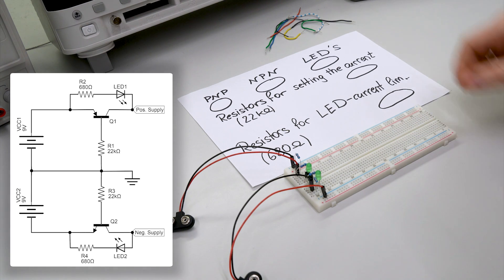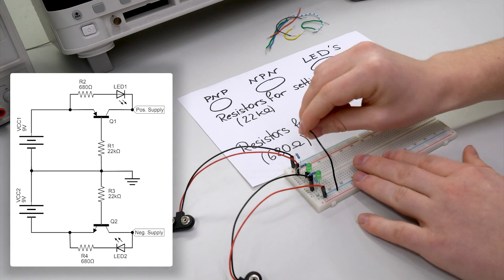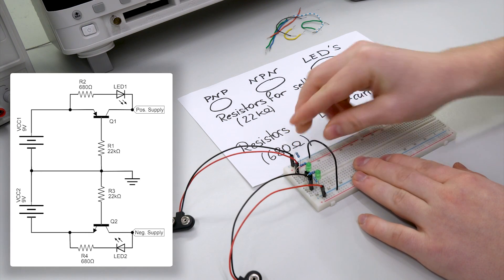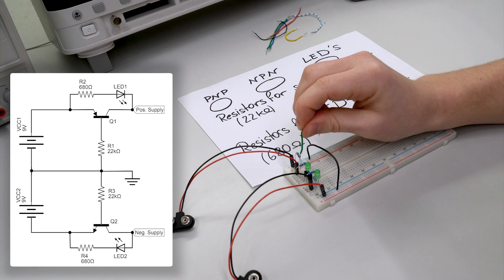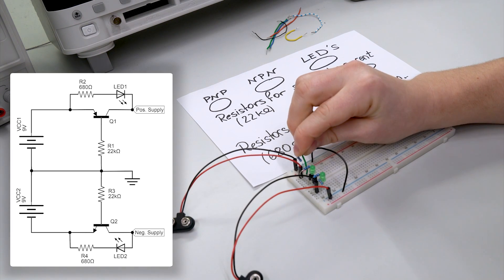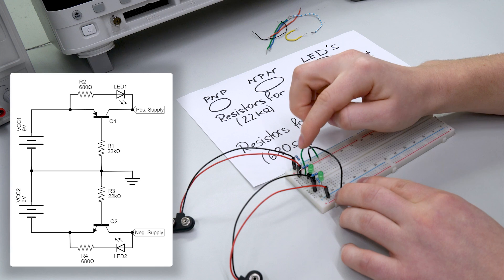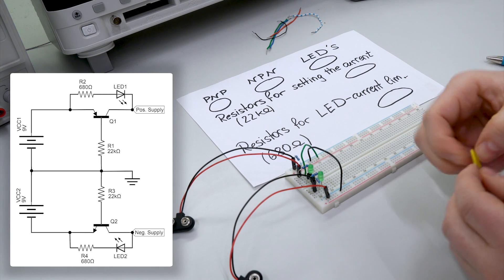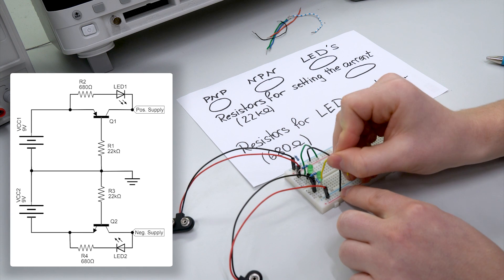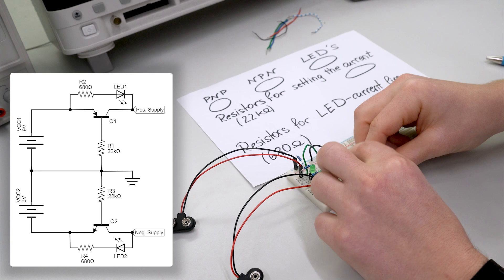Now we have to connect both grounds with a simple wire. So now we have a common ground. And the last thing we can do is to put the both collectors, so the both potentials, the positive potential with a wire to the positive rail up there. And the negative potential again from the collector to the negative supply, to the negative rail.